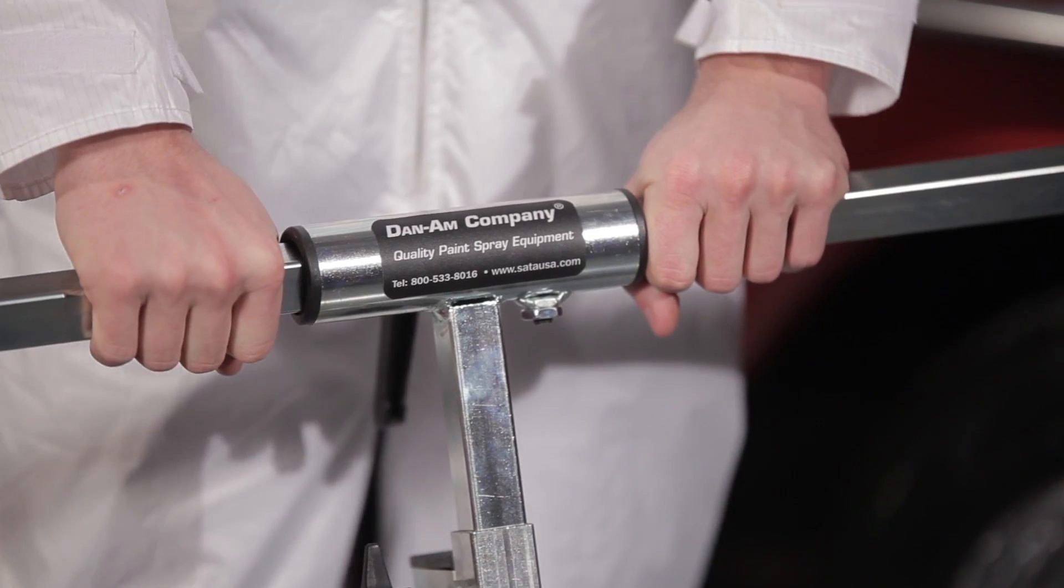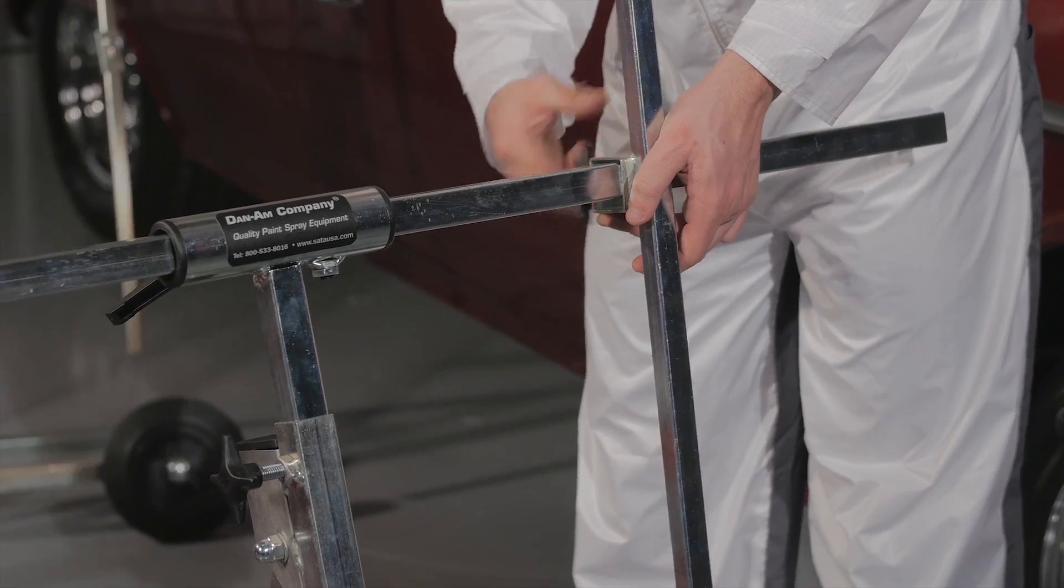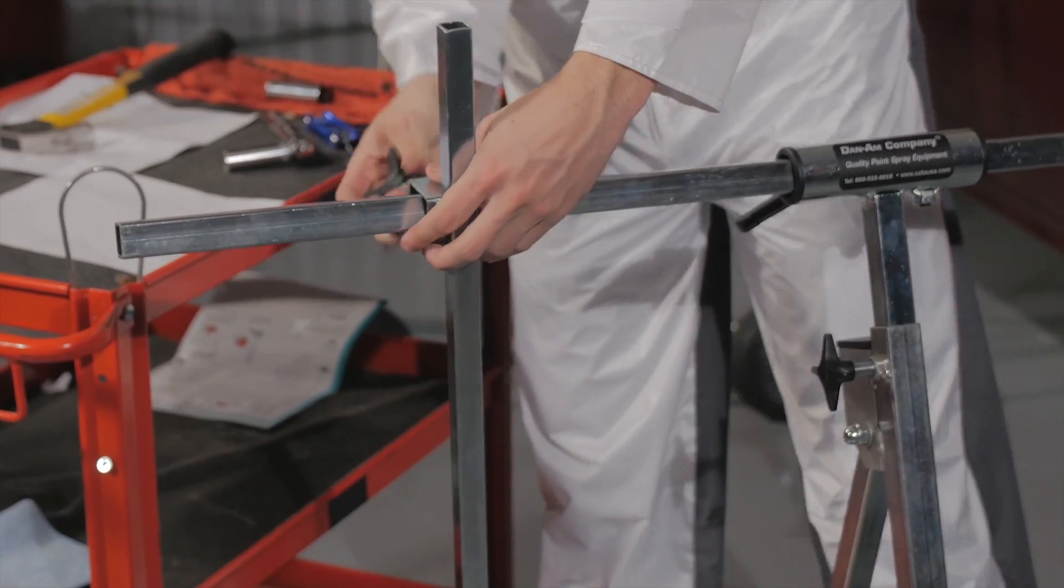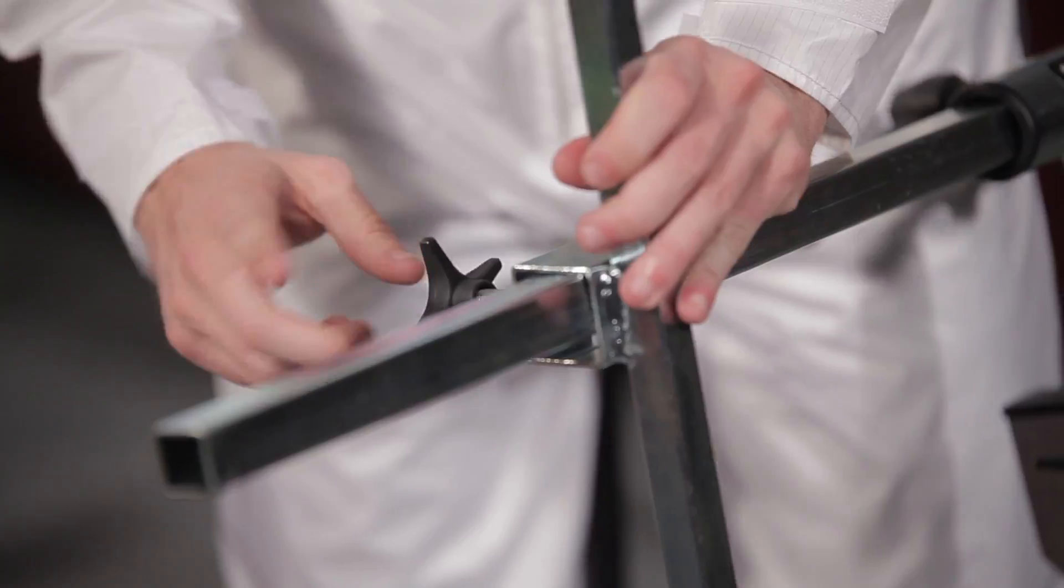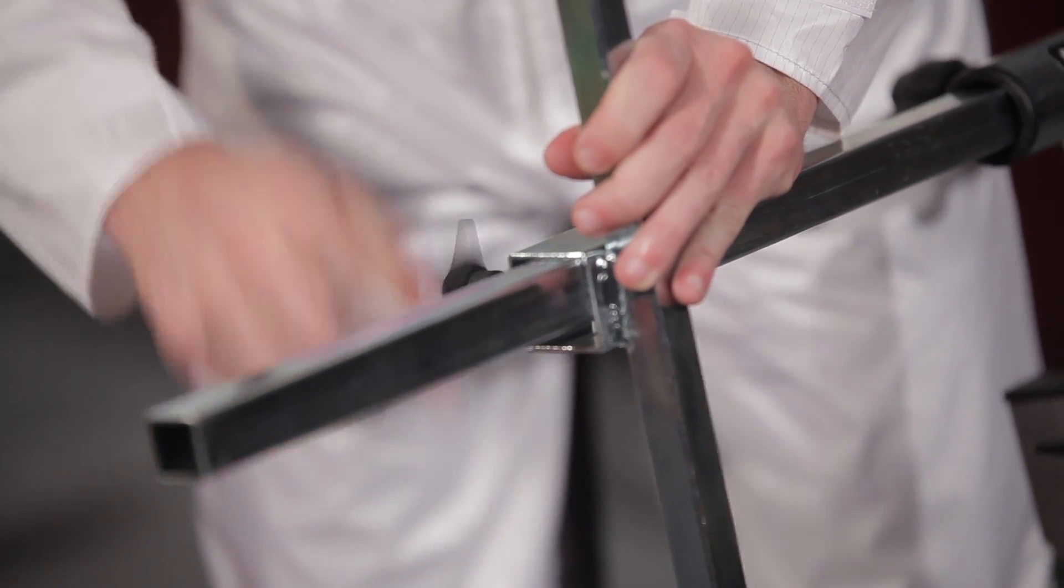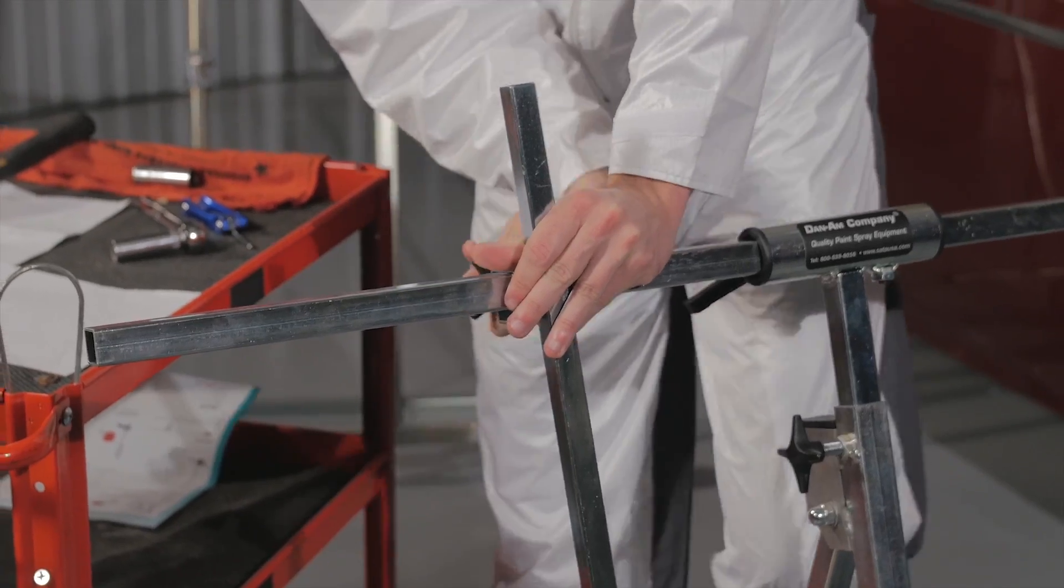Now we will add the extension and support arms. Take the panel and bumper support arms and slot them onto either end of the main support bar using the brackets at the top of the support arms. Secure the support arms using the hand screws. The rear of the brackets where you screw in the hand screws should be facing the rear of the stand so that the support arms hang down from the front of the stand.